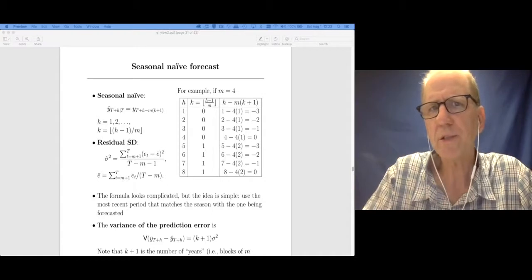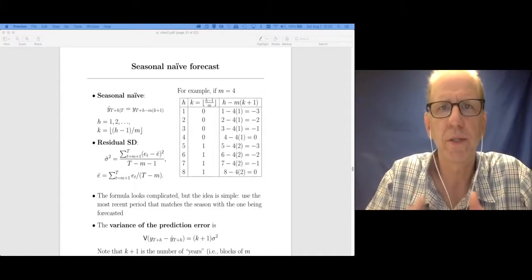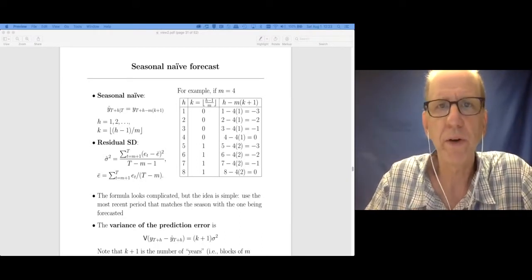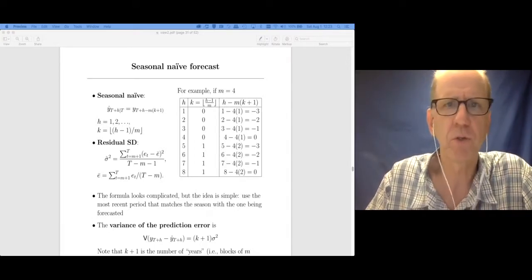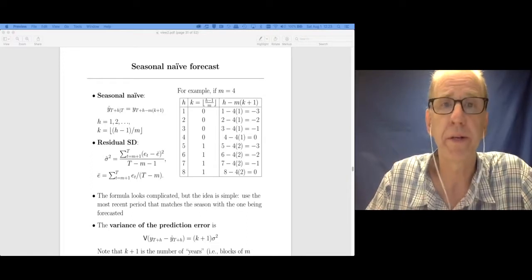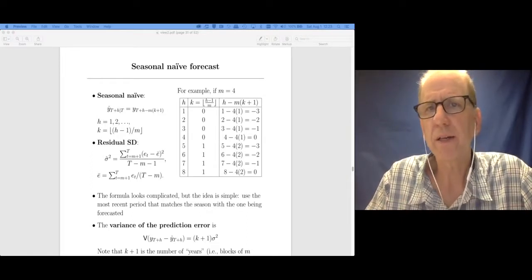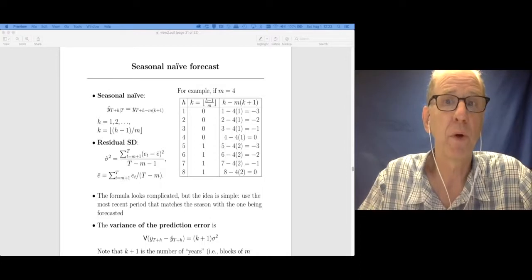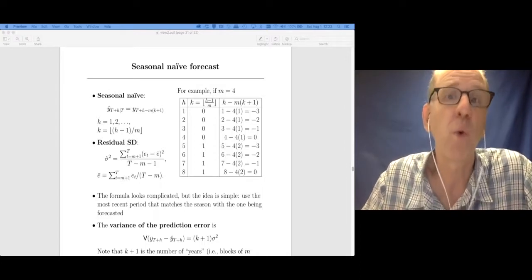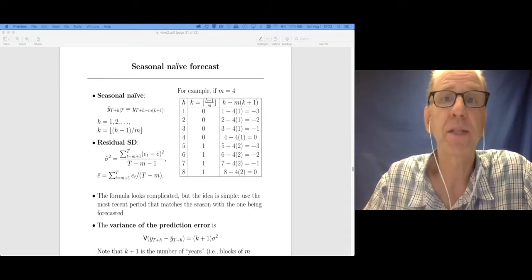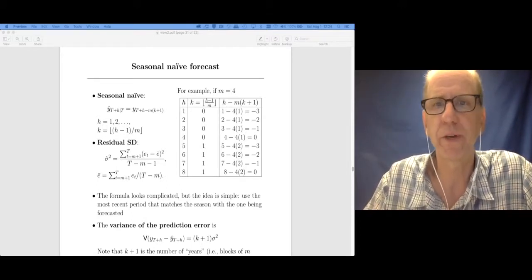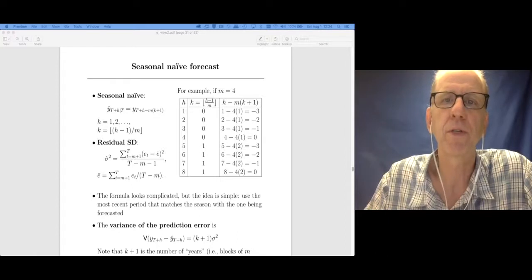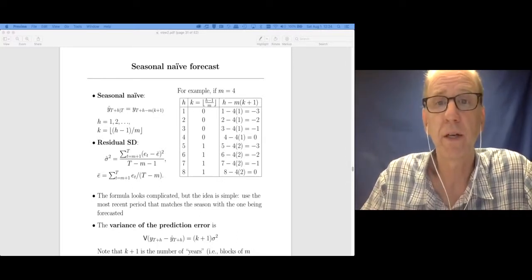The last model that our textbook uses as a benchmark model is called the seasonal naive forecast. This model is very good if you only have a seasonal effect, so there's no trend involved. The idea of a seasonal naive forecast is actually very simple. Let's have an example where I have seasonality by quarter, so I've got a period that repeats itself every four observations. Every fourth quarter is maybe Christmas and we see a certain effect there, whereas every first quarter has a different effect.